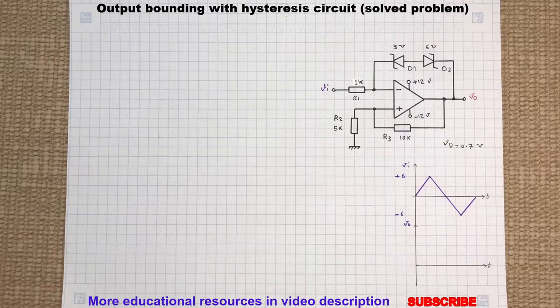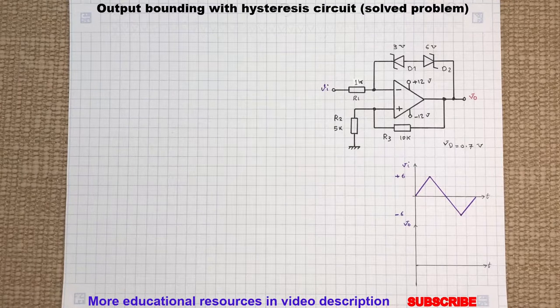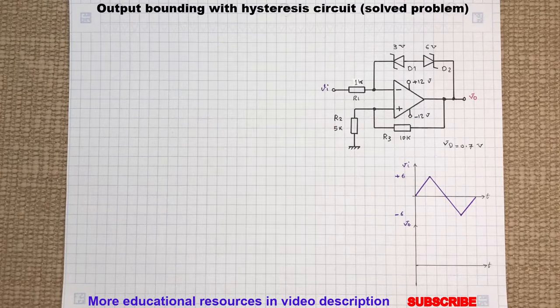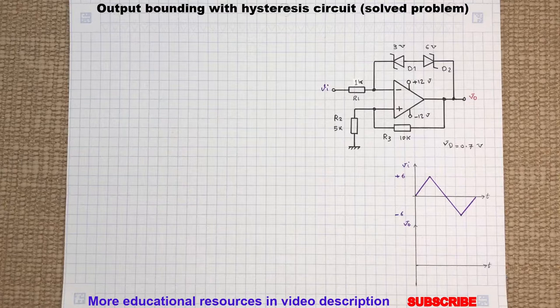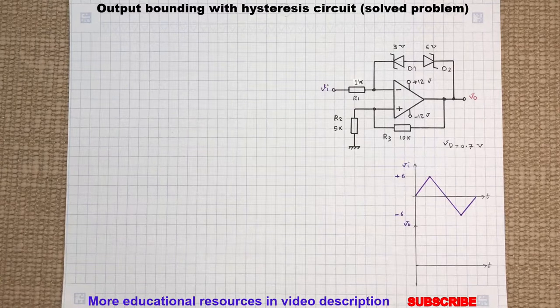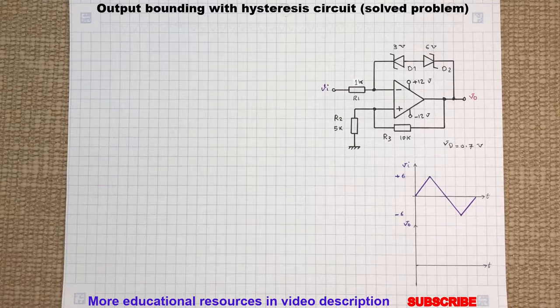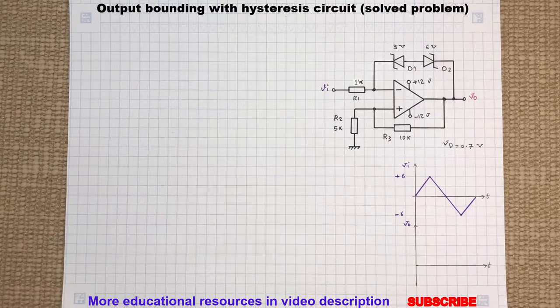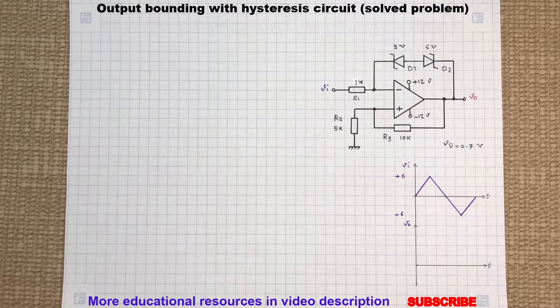To begin, let's assume the output of the op amp is at a negative high. This is because we don't know the initial state of the output. A negative high at the output will push the diode D1 in reverse bias and D2 in forward bias. Therefore the voltage across both diodes will be.